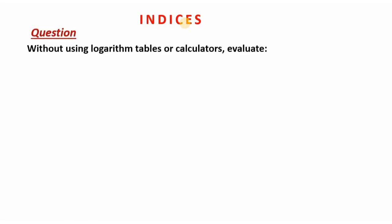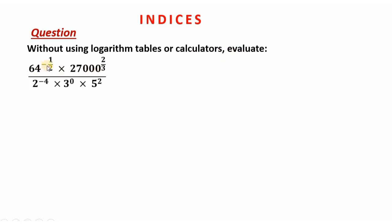The question reads: without using logarithm tables or calculators, evaluate 64 raised to negative one half, times 27,000 raised to 2 over 3, all over 2 raised to negative 4, times 3 raised to 0, times 5 raised to 2.